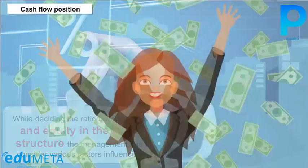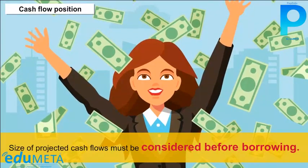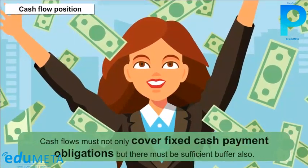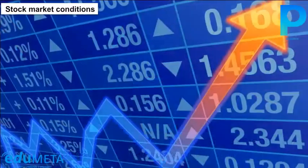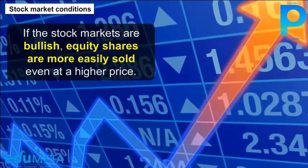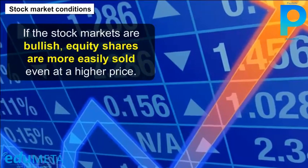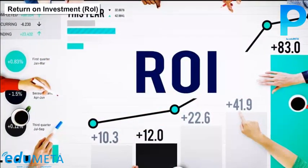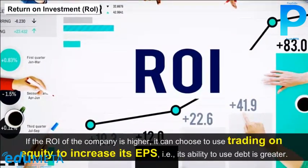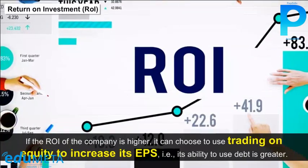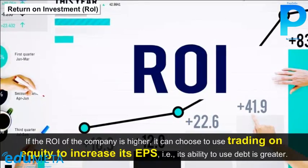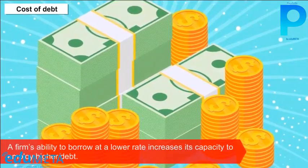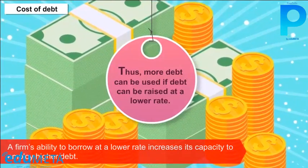Factors Influencing Capital Structure: Cash flow — the size of projected cash flows must be considered before borrowing; cash flows must cover fixed payment obligations with sufficient buffer. Stock market conditions — if markets are bullish, equity shares are more easily sold at a higher price, so equity may be preferred. Return on Investment (ROI) — if ROI is higher, the company can use trading on equity to increase EPS, meaning greater ability to use debt. Cost of debt — a firm's ability to borrow at a lower rate increases its capacity to employ higher debt.